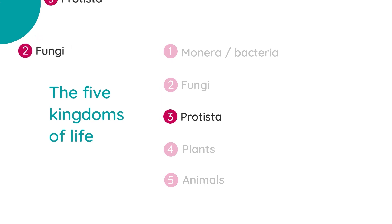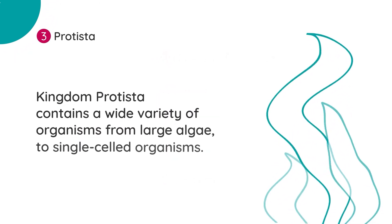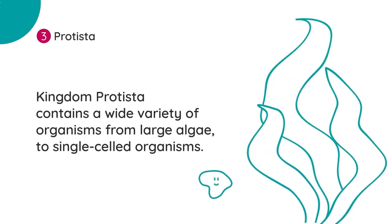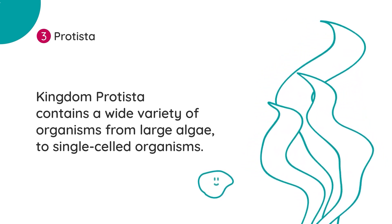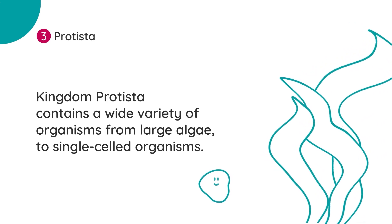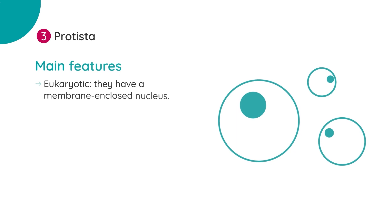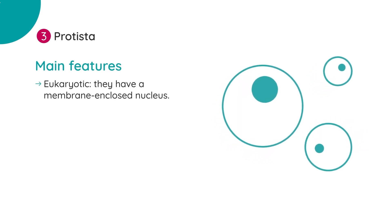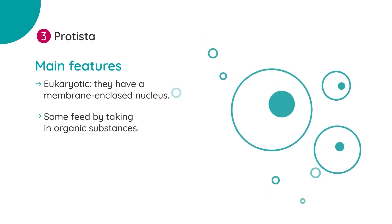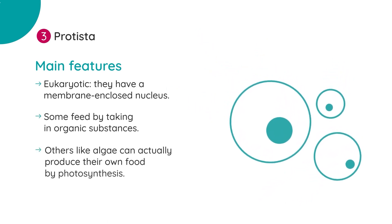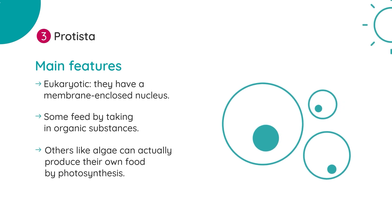Kingdom Protista contains a wide variety of organisms from large algae like seaweeds to single-celled organisms like amoeba and paramecium. Protists are found almost anywhere water is present. Main features include: they are eukaryotic, they have a membrane-enclosed nucleus; some feed by taking in organic substances or by absorbing nutrients through their cell walls, whereas others like algae can produce their own food by photosynthesis.